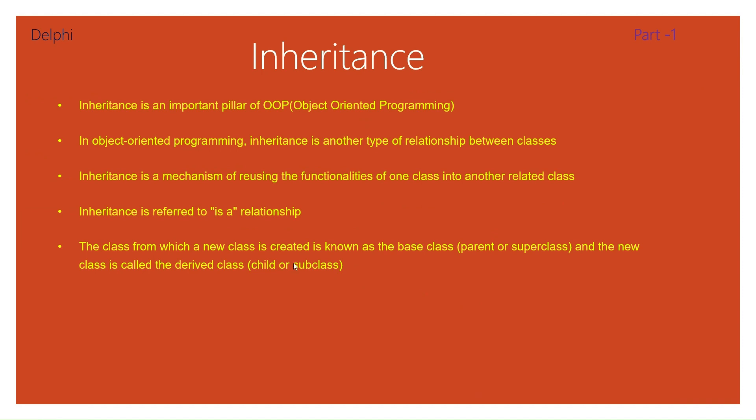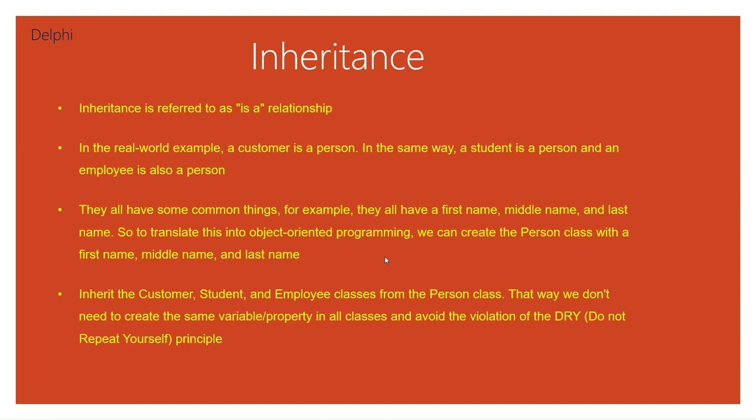The class from which a new class is created is known as the base class, also called the parent class or super class. The new class is called the derived class, also known as the child class or subclass. So inheritance represents the 'is-a' relationship.